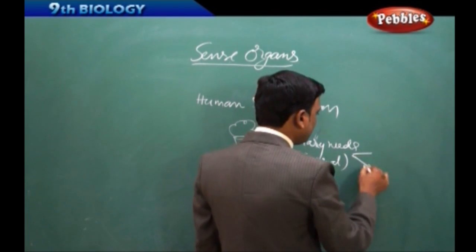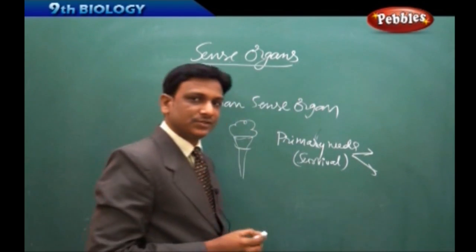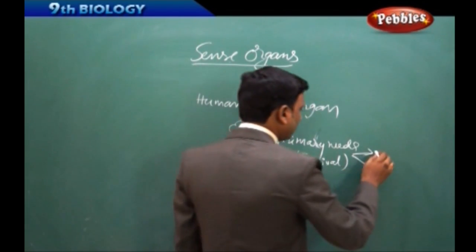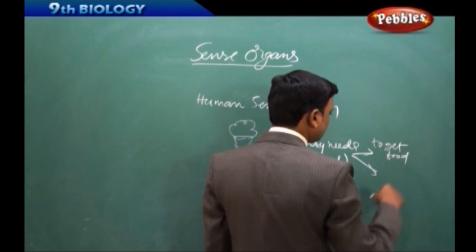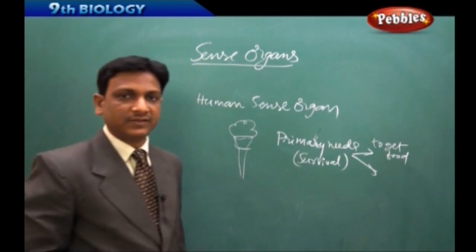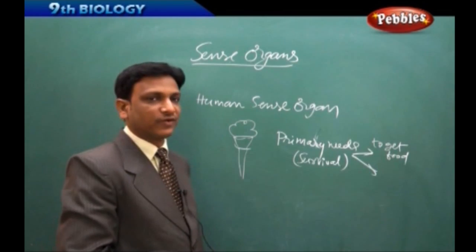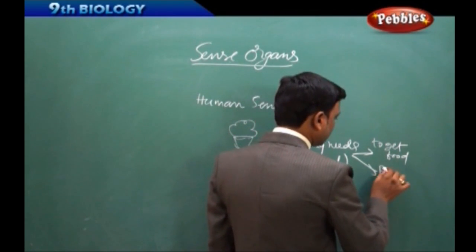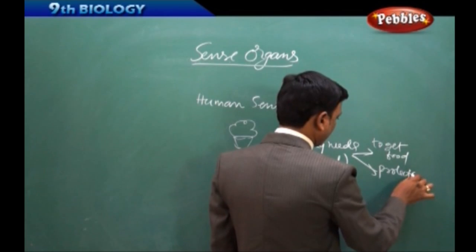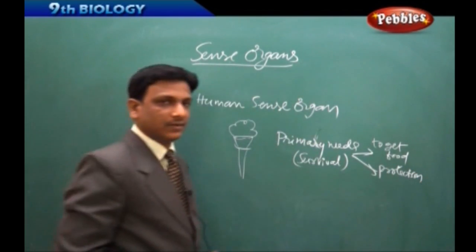We call it as survival of an organism. Survival means just being alive, just to live. Survival. So primary needs to get food, we need sense organs. Without sense organs, it is not possible to search for the food. And for protection.